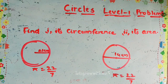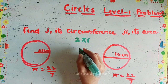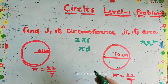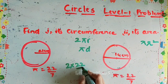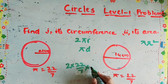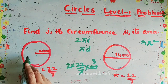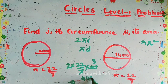Let's do our first question: find its circumference and area. The formula for circumference is 2πr, or we can say πd, and area is πr². So we substitute the values: 2 times 22/7 times the radius, which is 21 centimeters. Taking out the common factor — 7 into 21 — gives us 2 times 22 times 3, which is 132 centimeters.